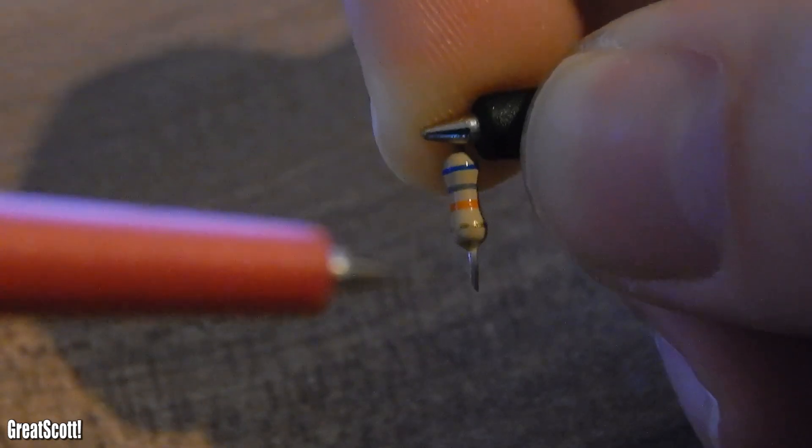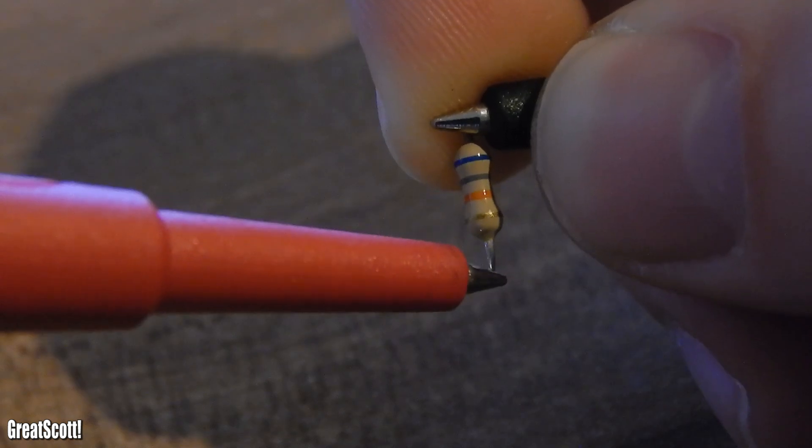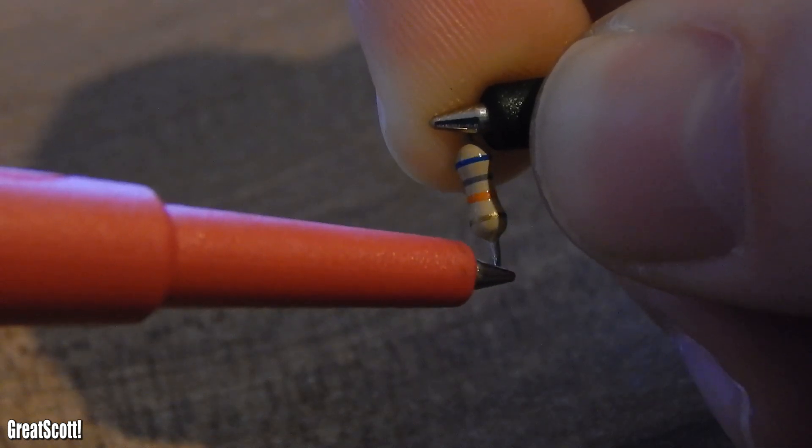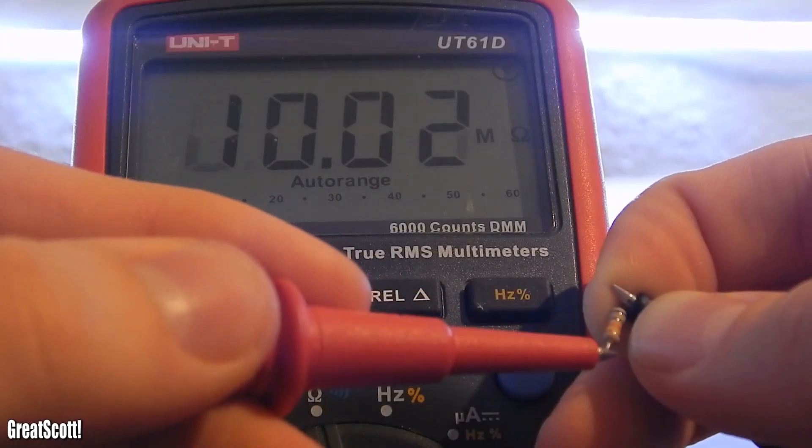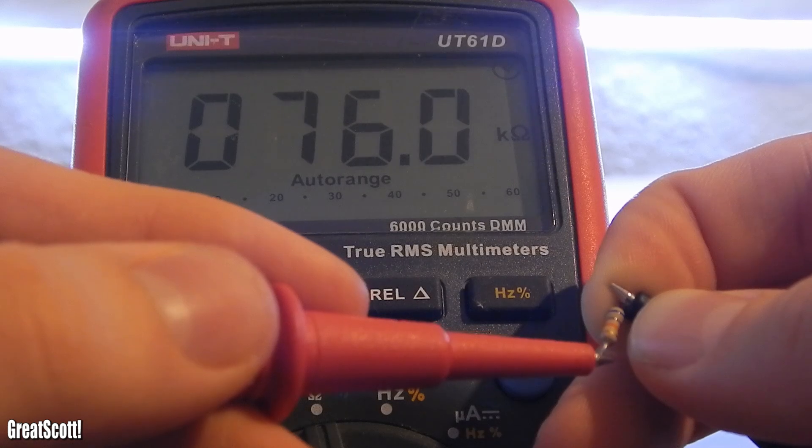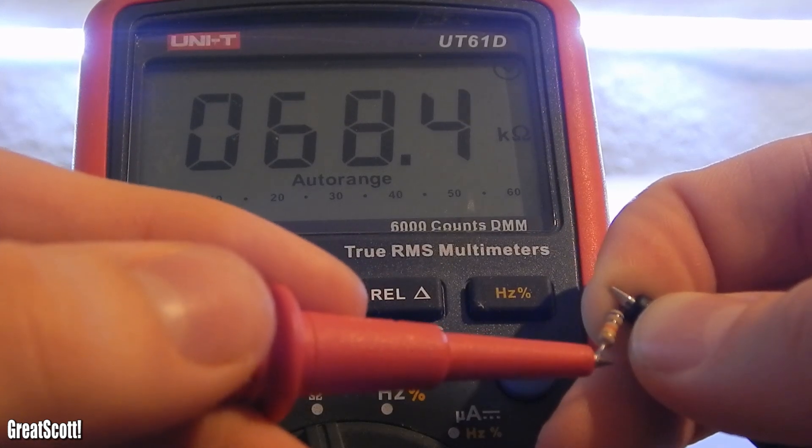Now you can measure the resistance by just connecting one probe to one side of the resistor and the other probe to the other side of the resistor. I said it would be easy. The resistor is around 68 kilo ohms.